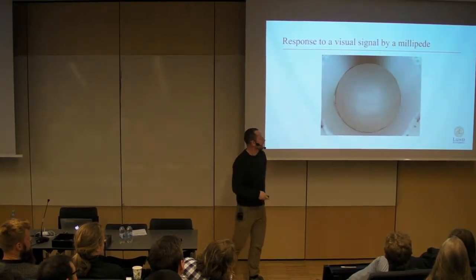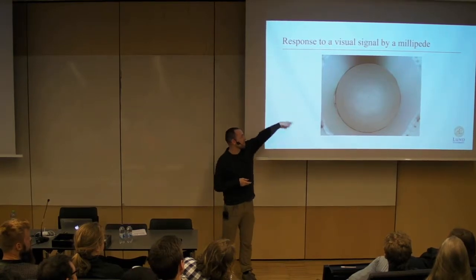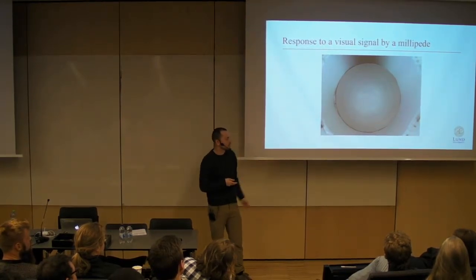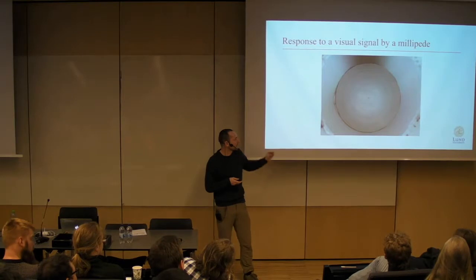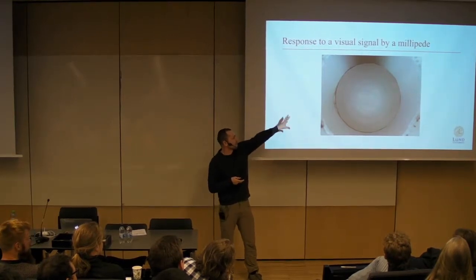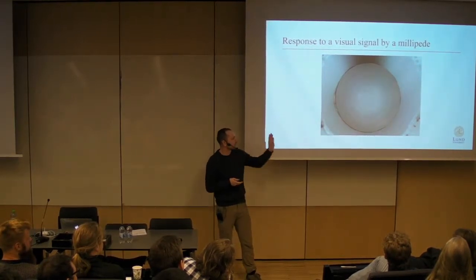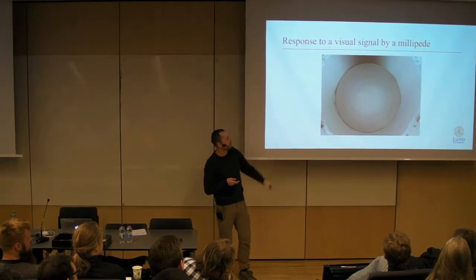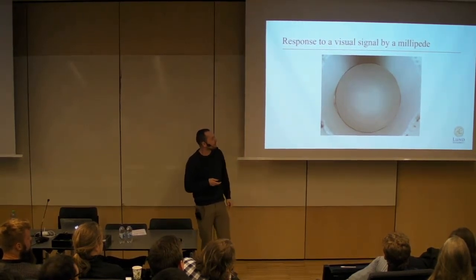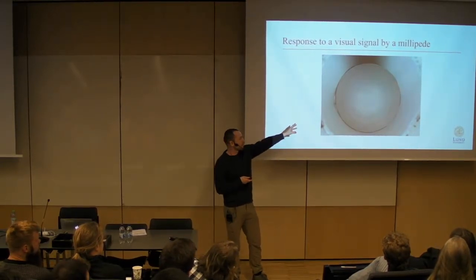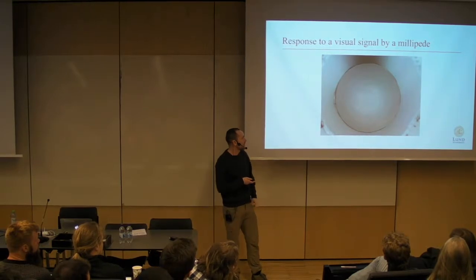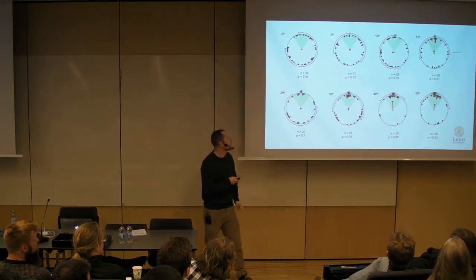I took an arena, put stimuli wrapped around the outside, and put bright lights over it. Millipedes move away from bright lights towards dark spaces. The stimulus is made from a difference of Gaussians, designed so that if the animal cannot resolve the pattern — if its angular sensitivity is too wide — it will not be able to find anything. Millipedes don't actually move this fast; this video is sped up about five times.